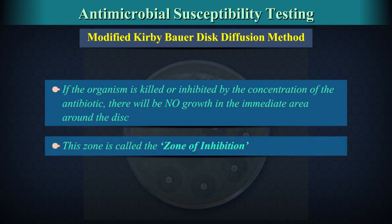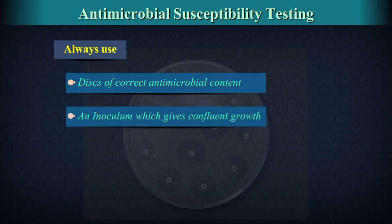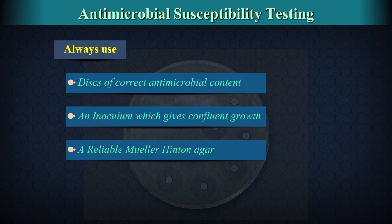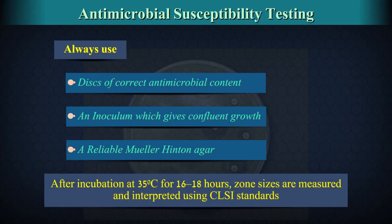This zone is called the zone of inhibition. Always use discs of correct antimicrobial content, an inoculum which gives confluent growth, and a reliable Mueller-Hinton agar. Quality control for media should always be performed and the test method must be followed exactly in every detail. After incubation at 35 degrees centigrade for 16 to 18 hours, zone sizes are measured and interpreted using CLSI standards, which are available as charts from various manufacturers.